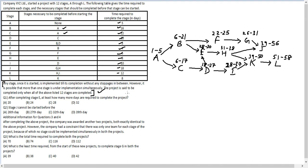Question 1: After completing stage E, at least how many more days are required to complete the project? Stage E finishes on day 30 and the total project takes 58 days, so 28 more days are required — the answer is 28. Question 2: Stage J cannot be started before day 39, so the answer is option D.